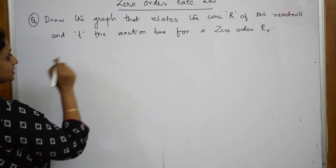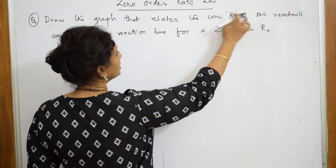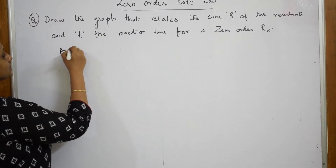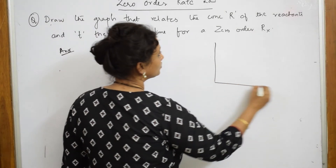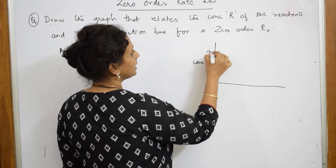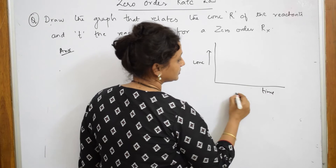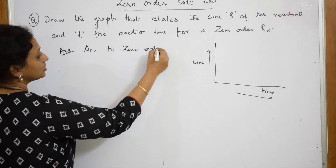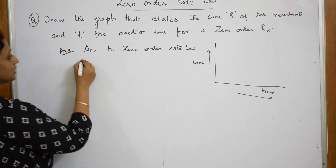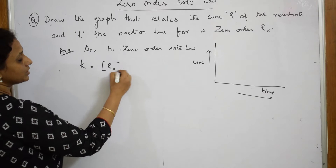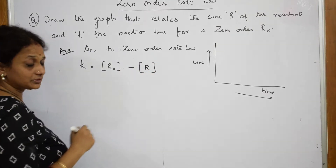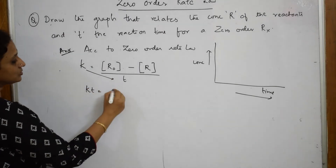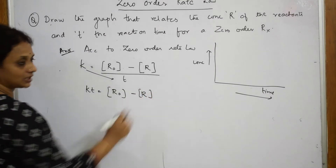When I speak about the graphical representation, you draw the graph that relates the concentration R of the reactant and T the reaction time for zero order reaction. According to the zero order rate law, the rate constant K equals the initial concentration R₀ minus the final concentration R of the reactant, divided by the change in time.